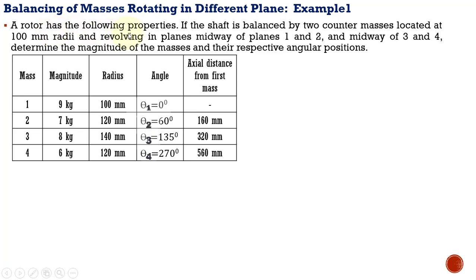The rotor has the following properties. The shaft is balanced by two counter masses located at 100 mm radius, revolving in planes midway of planes one and two, and midway of planes three and four. We need to determine the magnitude of the masses and their respective angular positions.